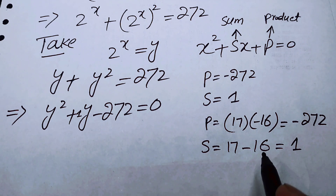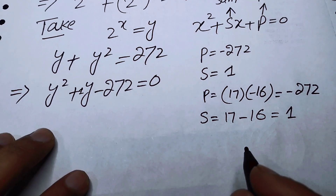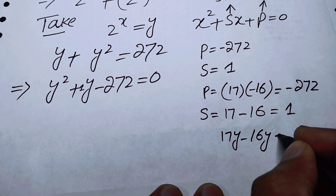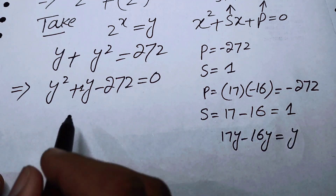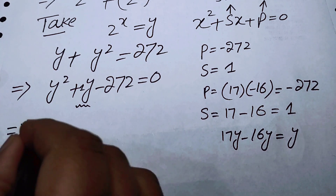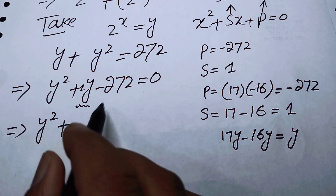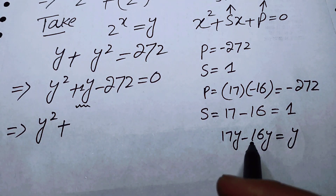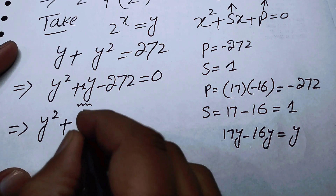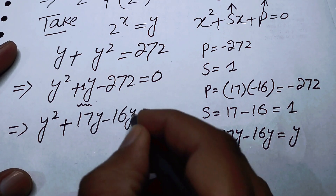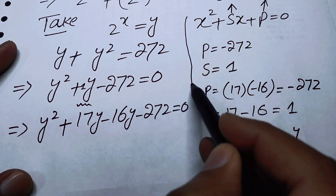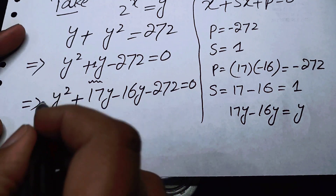Now we split the middle term by replacing y with 17y minus 16y. We obtain: y squared plus 17y minus 16y minus 272 equals 0.